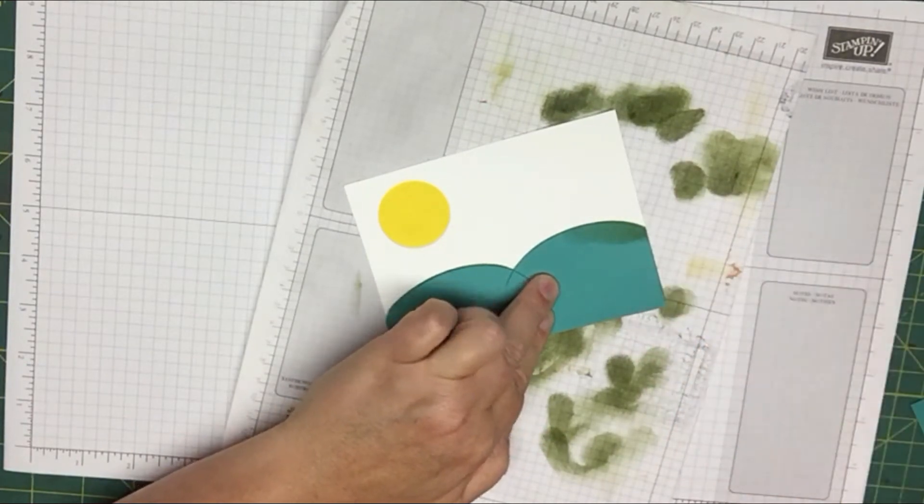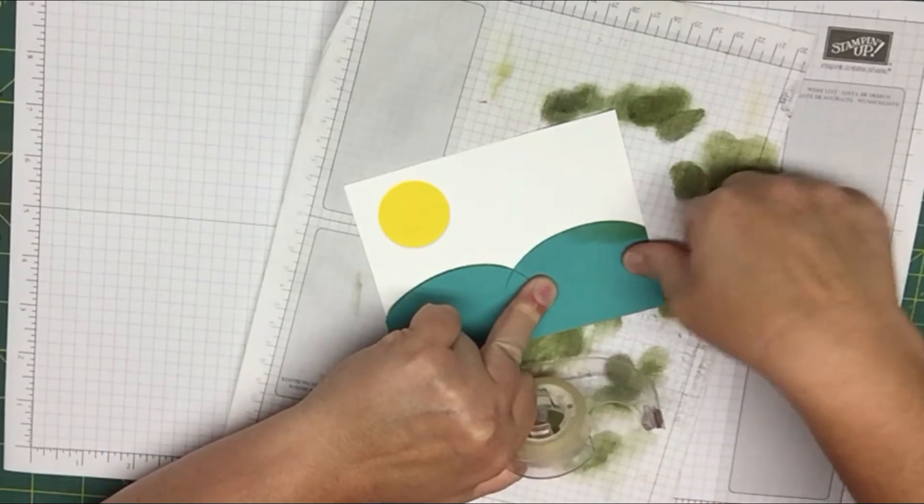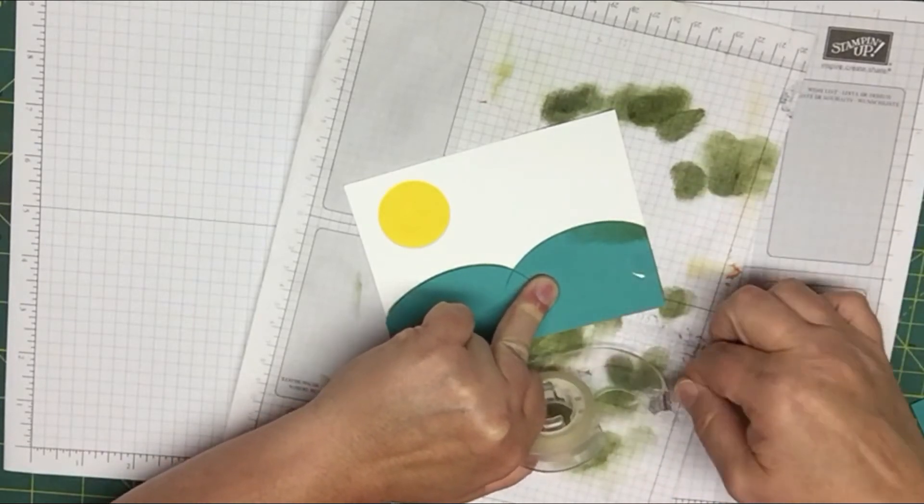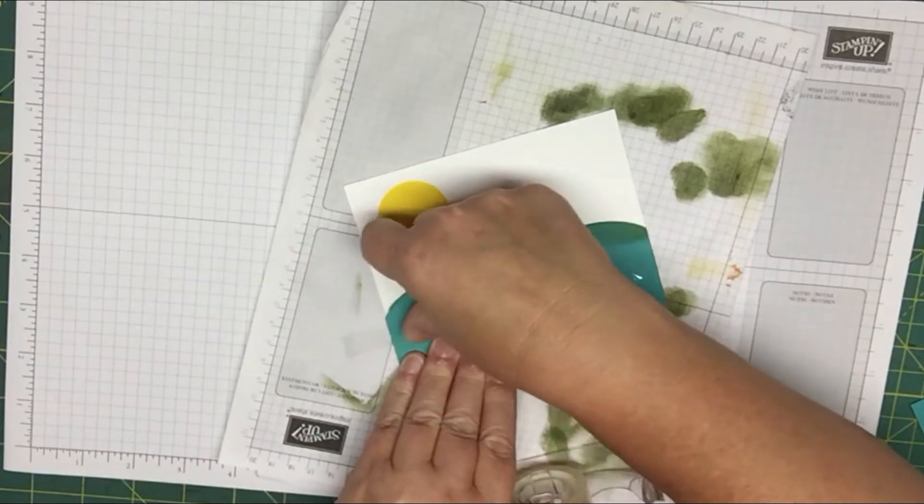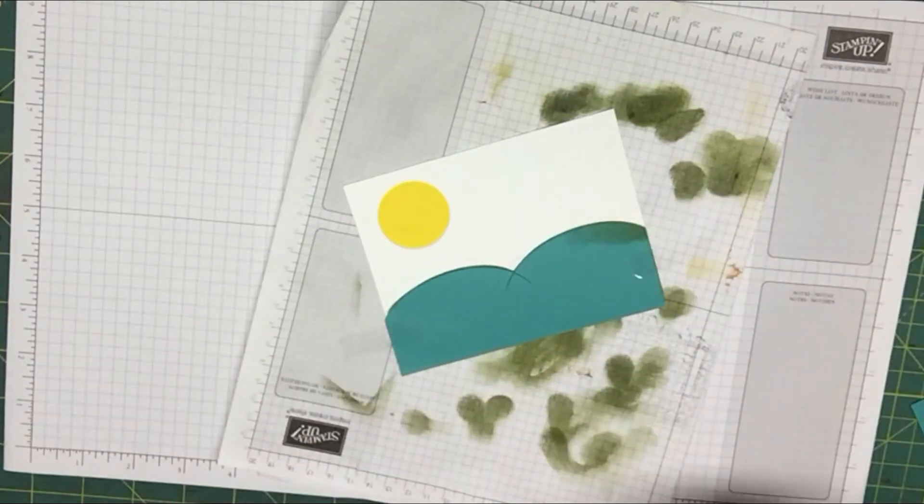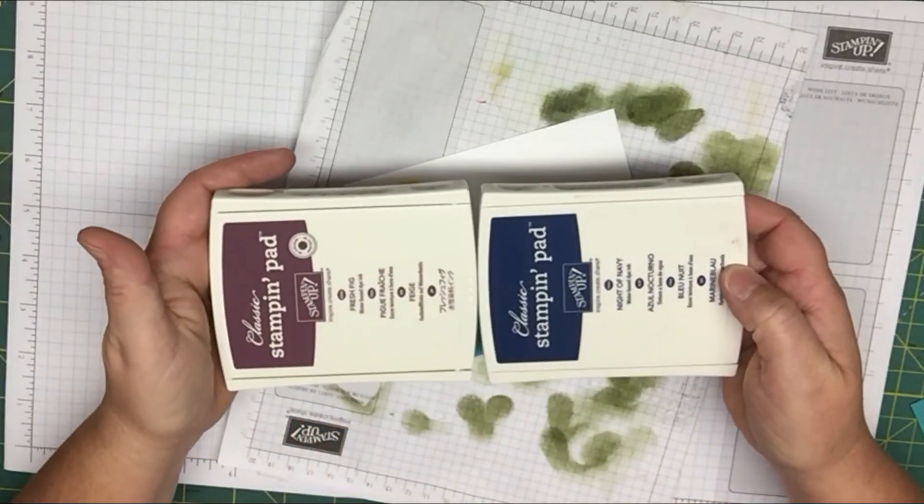And you can tape it down if you want. If you want to use some washi tape or something to tape it down, you can do that. You can use some scotch tape, whatever you want to do, to hold it there. Or you can just hold it. But I'll just tape it down just to show you guys that you can do that if you want.